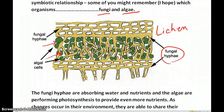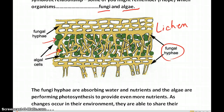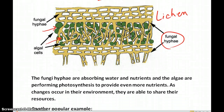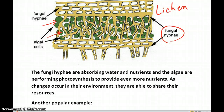They both benefit, but how do they both benefit? The fungal hyphae are absorbing water and nutrients, and the algae are performing photosynthesis. That way, they get nutrients from both of these. Depending on what's going on with climate change or just what's going on seasonally — any changes in the environment — they're able to share their resources. And so this is mutualistic: they both benefit.